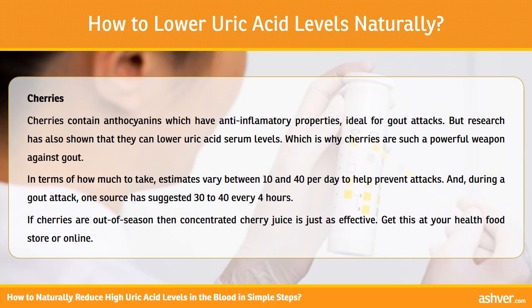Cherries. Cherries contain anthocyanins which have anti-inflammatory properties, ideal for gout attacks. But research has also shown that they can lower uric acid serum levels, which is why cherries are such a powerful weapon against gout. In terms of how much to take, estimates vary between 10 and 40 per day to help prevent attacks, and during a gout attack one source has suggested 30 to 40 every 4 hours. If cherries are out of season, then concentrated cherry juice is just as effective — get this at your health food store or online.